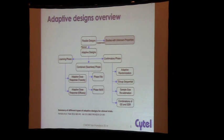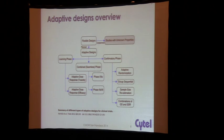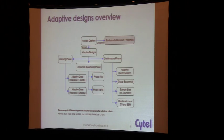There are also seamless designs. The FDA doesn't really like the term seamless, but they basically combine objectives from what have traditionally been different trials into one. The adaptive dose selection in Phase 3 starts with more than two arms and then drops some or selects one as you go — what we used to term Phase 2-3, though we don't really use that terminology anymore.